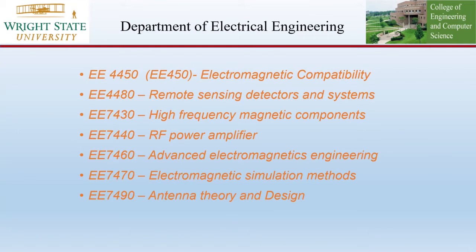In addition to the core courses, Wright State University also offers a number of electives relevant to microwave technology: EE4450 Electromagnetic Compatibility, EE4480 Remote Sensing Detectors and Systems, EE7430 High Frequency Magnetic Components, EE7440 RF Power Amplifier, EE7460 Advanced Electromagnetic Engineering, EE7470 Electromagnetic Simulation Method, and EE7490 Antenna Theory and Design.